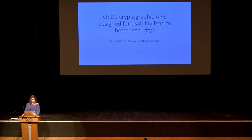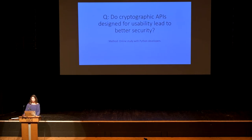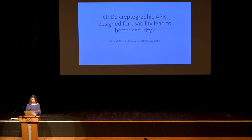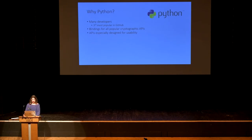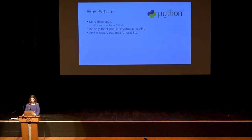We evaluated this question by doing an online study with Python developers. We primed developers that they had to write secure code — we suggested they were working on a tool that would allow citizen scientists all over the world to collect data, maybe on human trafficking, and that when cryptography in their code failed, they would put actual humans at risk. We also picked the library they should use, so we evaluated how well they could work with the library we picked rather than which choice they made. We used Python because it has many developers to recruit from, bindings for all popular cryptographic APIs, and those APIs designed especially for usability.